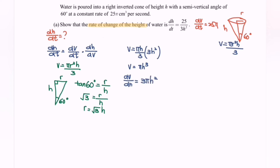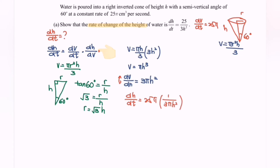Next, substitute into the chain rule: dh/dt equals 25π multiplied by dh/dV. Since dh/dV is the reciprocal of dV/dh, we flip the situation and get 1 over 3πh². Simplifying, dh/dt equals 25π over 3πh², which is what we were required to show.